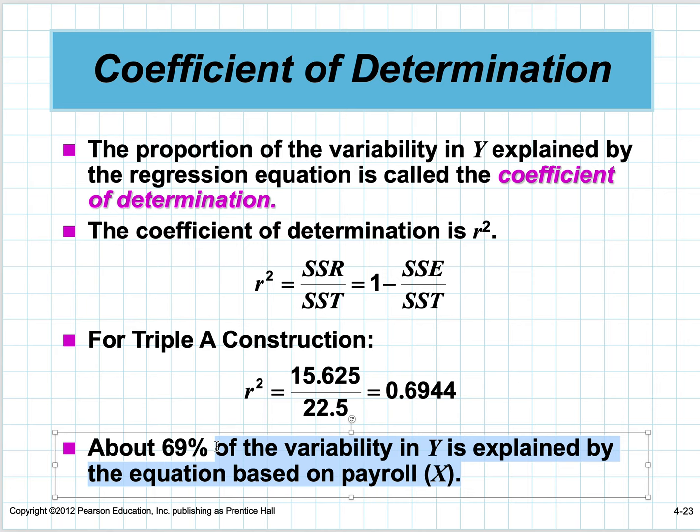This is the way you interpret it—it's really important. I would love to see this in your full sentence answers: about 69.44% of the variability in Triple A revenue is explained by the regression model based on local payroll.